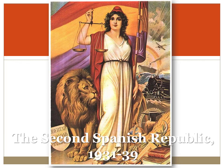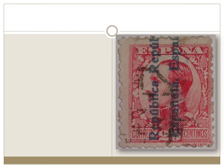The Second Spanish Republic lasted from 1931 to 1939. This image is the allegory of the Second Spanish Republic — there's a lion, some figure with scales and so on.